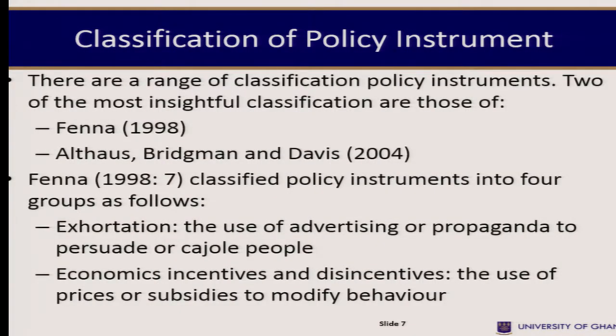How do we classify policy instruments? There are a range of classifications. Two of the most insightful are those of FIANA and Bridgman and others. FIANA classifies policy instruments into four groups: Exhortation — the use of advertising or propaganda to persuade or cajole people; Economic incentive and disincentive — the use of prices or subsidies to modify behavior; Provision — governments may directly provide goods and services themselves; and Regulation — laws may prescribe or control behavior.